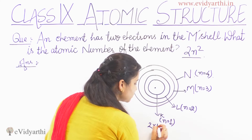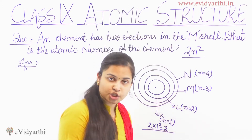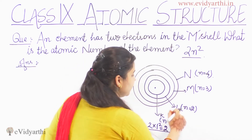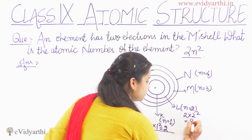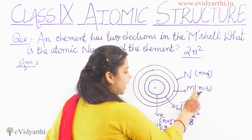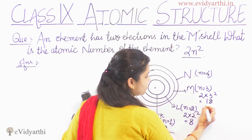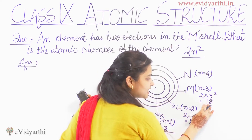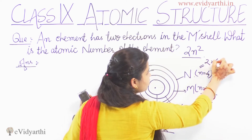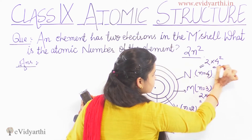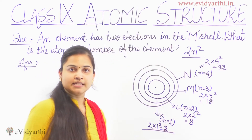So the maximum number of electrons K-shell can hold: 2 × 1² = 2. K-shell can hold a maximum of 2 electrons. Similarly, L-shell: 2 × 2² = 8 electrons maximum. M-shell: 2 × 3² = 18 electrons maximum. N-shell: 2 × 4² = 32 electrons maximum.